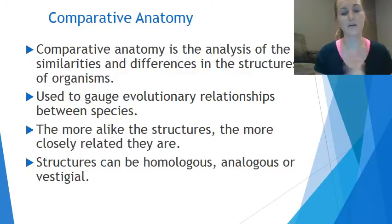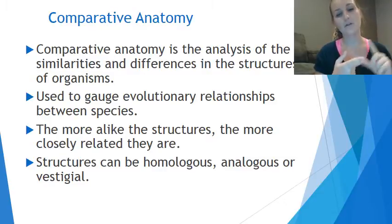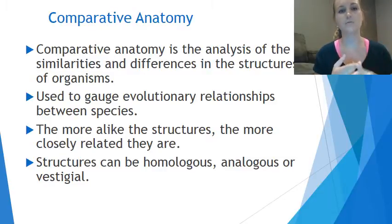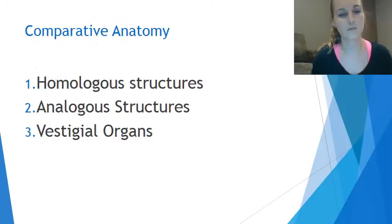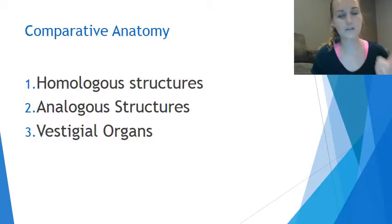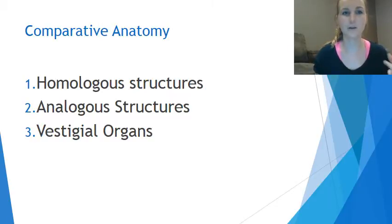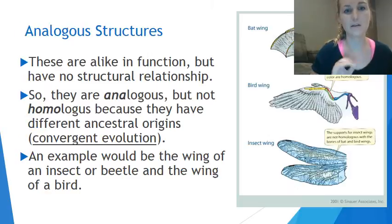We have three kinds of classifications when we look at comparative anatomy: homologous structures, analogous structures, and vestigial organs.